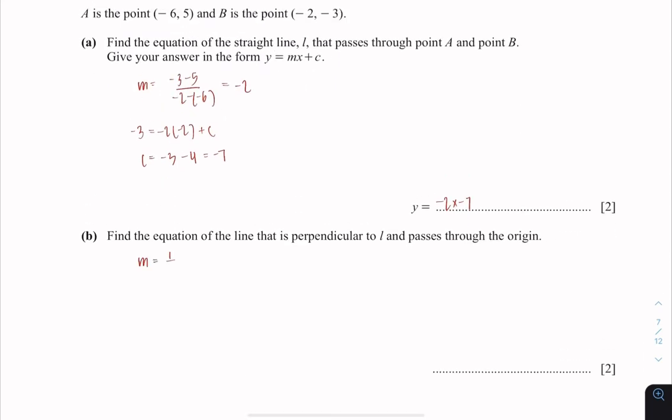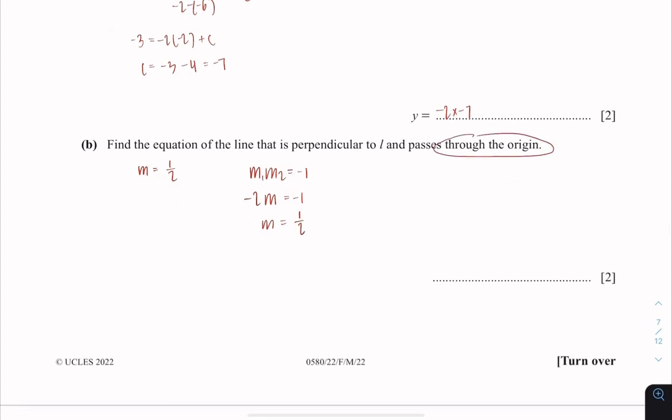Now the equation of perpendicular. The gradient would be 1 over 2, because m1 multiplied with m2 equals negative 1, where m1 and m2 are perpendicular to each other. Hence my perpendicular gradient is 1 over 2. And it passes through the origin, so my coordinate is 0, 0. Hence my c is also 0. So the final equation is y equals 1 over 2x.